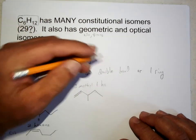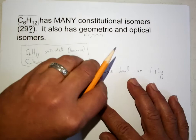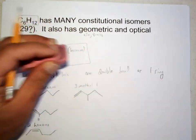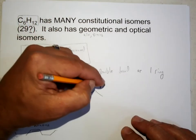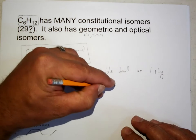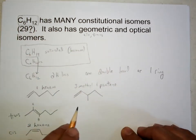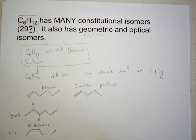Or sorry, one, not hex. The longest chain is five carbons, so three-methyl, one-pentene. And you can continue to shorten the chain and add substituents and get quite a few isomers there.